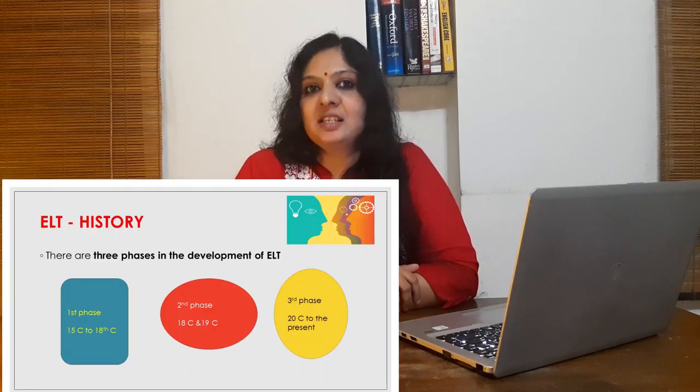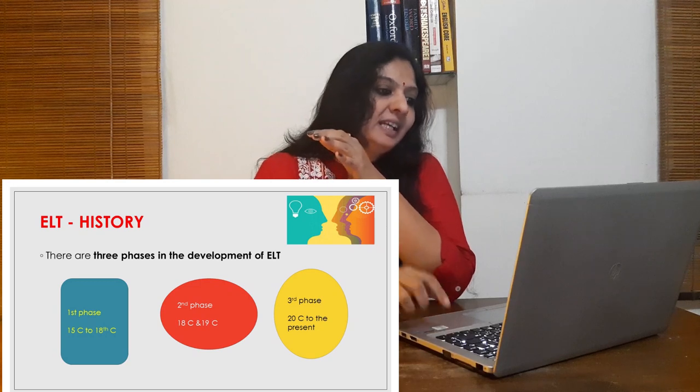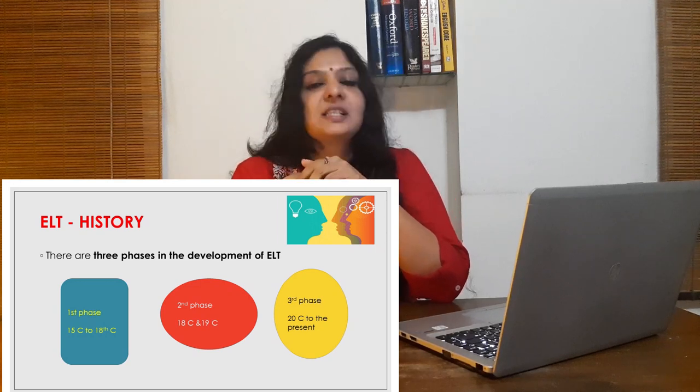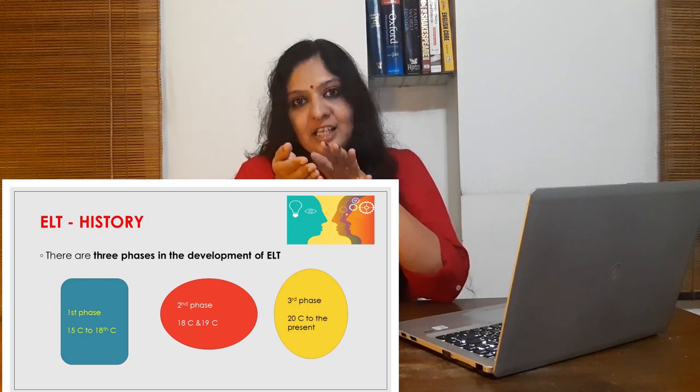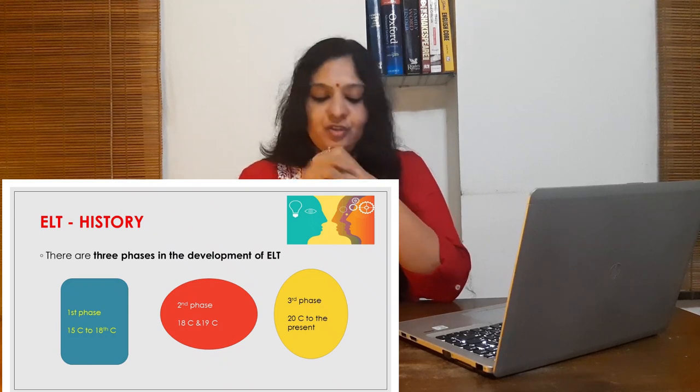L1 denotes first language and L2 denotes a second language. Now let's discuss the evolution of ELT as a discipline. There are three phases in the development of ELT: the first phase is from the 15th century to the 18th century, the second phase is from the 18th century to the 19th century, and the third phase is from the 20th century to the present.